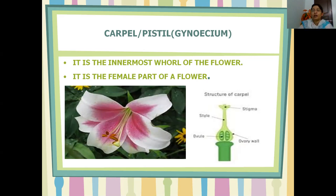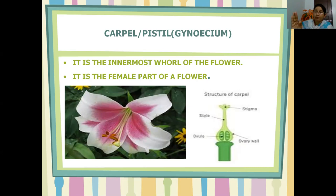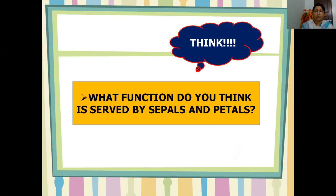We have now discussed the complete structure of a flower. A flower has four whorls: the outermost whorl — the sepals; the second whorl — petals; the third whorl — androecium; and the innermost whorl — gynoecium.